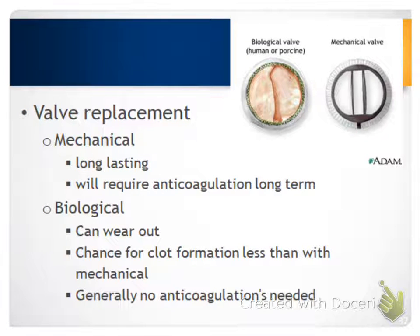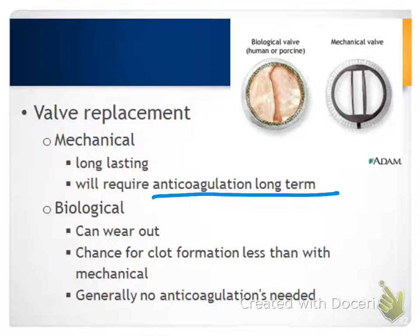There are surgical options if medications are insufficient or disease is too severe. Valve repair is typically the surgical procedure of choice, but if the patient doesn't qualify, valve replacement may be required. Replacements come in mechanical and biological types. Mechanical valves are long-lasting but require lifelong anticoagulation therapy. Biological valves can wear out but carry less risk of clot formation since they are not a foreign material — they are made of the same collagen our valves are made of — and do not require anticoagulation.